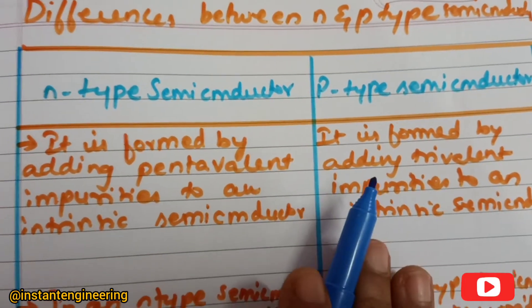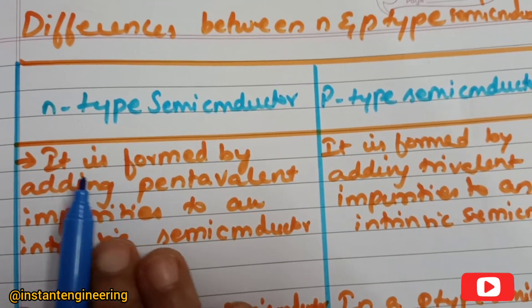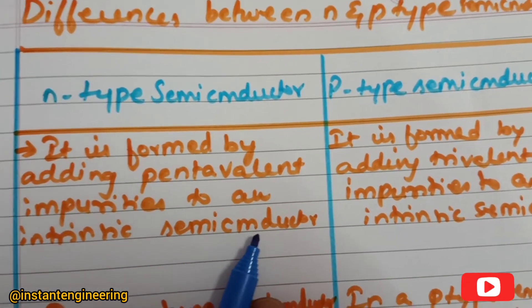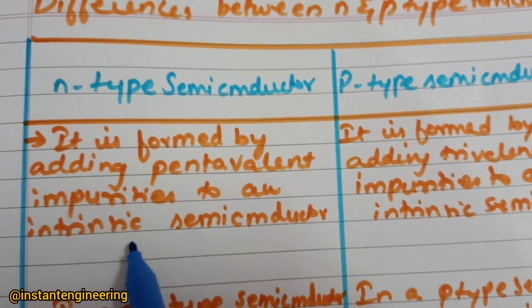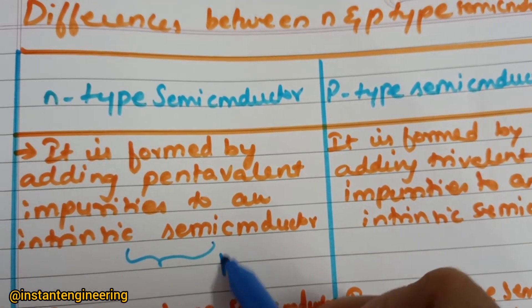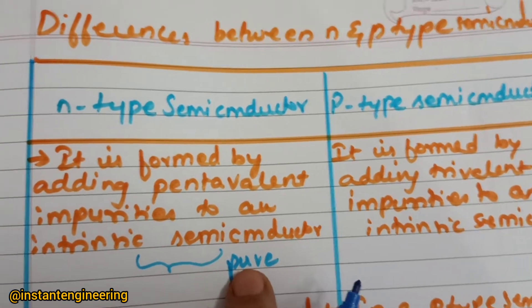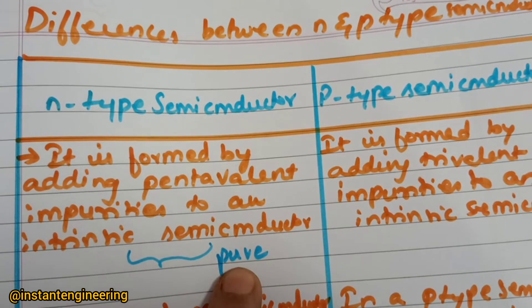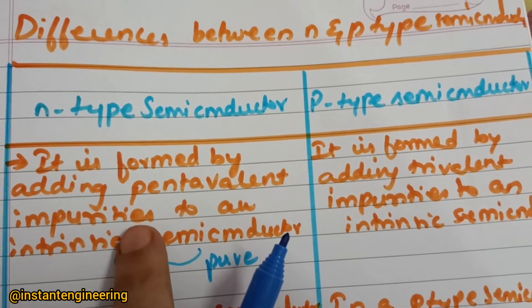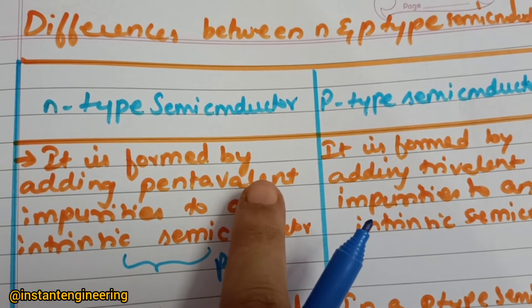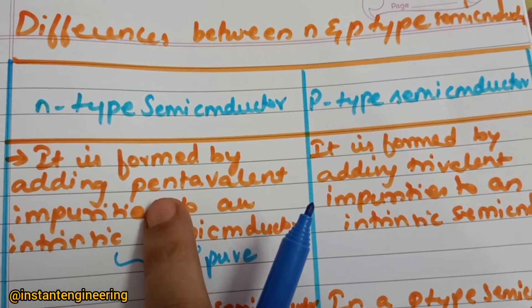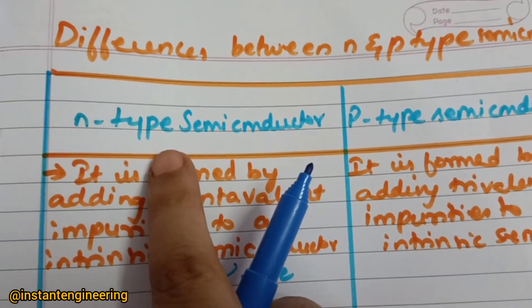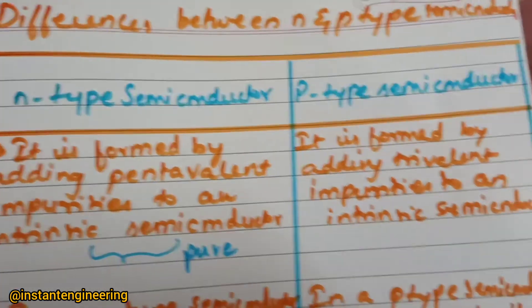OK, what is n-type? The basic thing is it is formed by adding pentavalent impurities to an intrinsic semiconductor. An intrinsic semiconductor is any semiconductor in its pure form, meaning no impurities are added to it. If for this pure semiconductor you are adding pentavalent impurities — that means in its valence orbit there are five electrons — then the n-type semiconductor is formed.